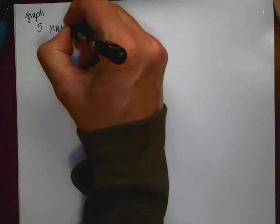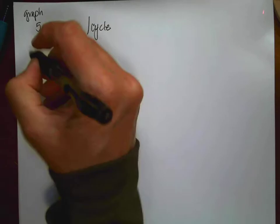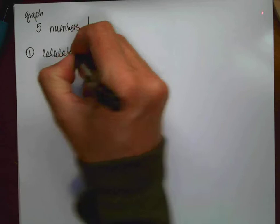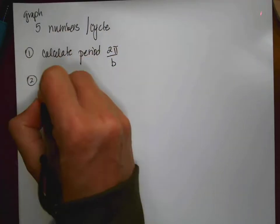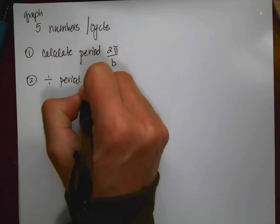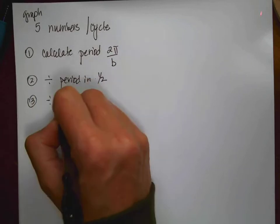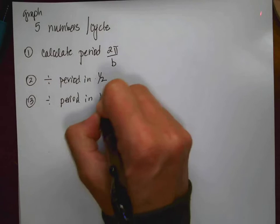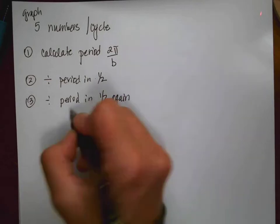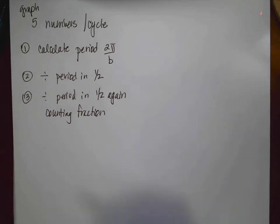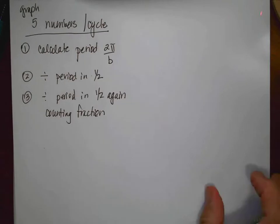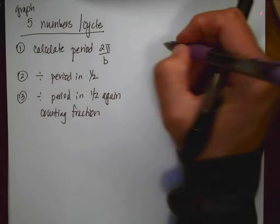We're always going to graph five numbers per cycle. The steps are: first, calculate the period using 2π/b. Second, divide the period in half and plot that point. Then divide the period in half again — that's the counting fraction — and plot your points. Every time we graph sine or cosine by hand, we graph five points.